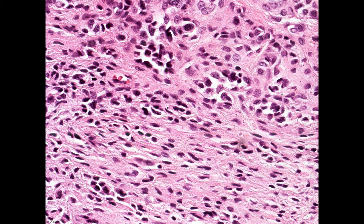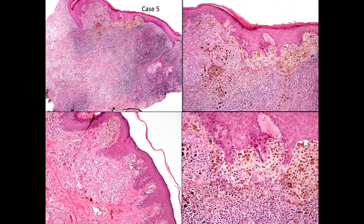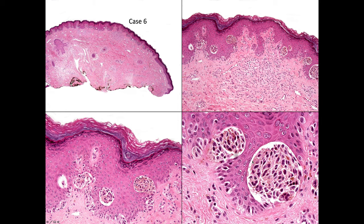Another case — and by now these should be becoming child's play: huge junctional nests, very heavy pigmentation, nests not at the tips of the rete ridges, and a very discohesive population. And this is case 6: it's compound with a little dermal activity but mostly junctional. Again, the nests are scattered around the sides of the rete ridges rather than the tips. They're very big with a retraction artifact — discohesive and lots of pigment. Another classical nevus of special site.